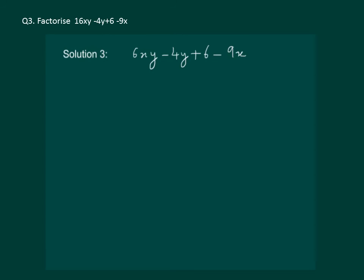Let us read the question on the slide. Factorise 6xy minus 4y plus 6 minus 9x. Let us see whether we have a common factor in the whole algebraic expression. Clearly there is no common factor in the whole algebraic expression, so we cannot use the common factor method to factorize this algebraic expression.